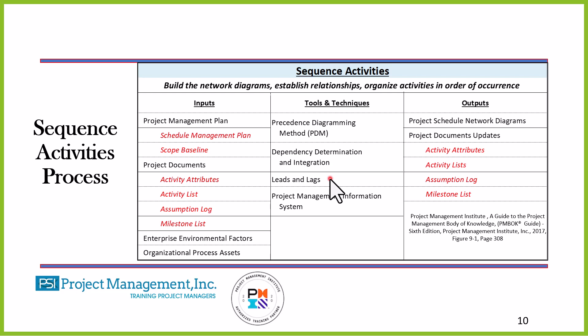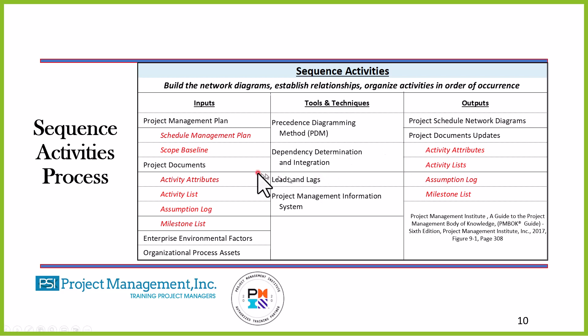For example, I pour the footing on the house and have to allow the concrete to cure before I build the foundation — that's a lag. A lead example: I finish painting one room and start putting the flooring down before I finish painting the inside of the house. The project management information system is where you store all of your projects. The output is the project schedule network diagram. And we have project document updates — progressive elaboration — as I'm doing this process, I learn more and update the appropriate plans and documents.